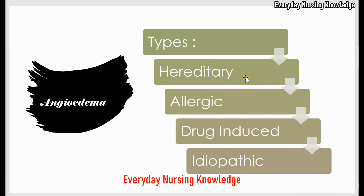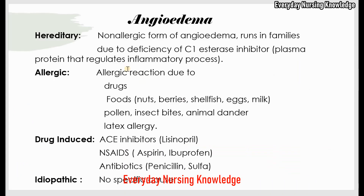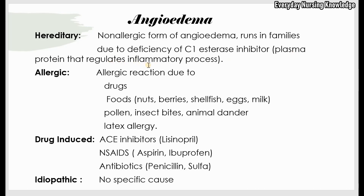There are four types of angioedema: hereditary, allergic, drug-induced, and idiopathic. Hereditary angioedema runs in families — many family members may have a history or episodes of angioedema. It is not an allergic form. It is caused by a deficiency of C1 esterase inhibitor, a protein present in the plasma that regulates or controls the inflammatory process.